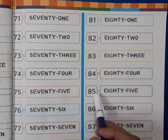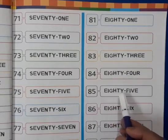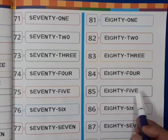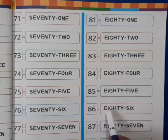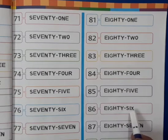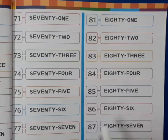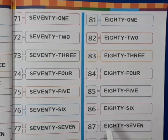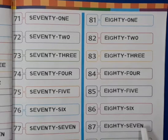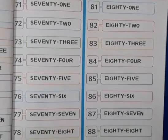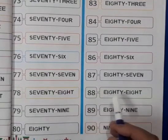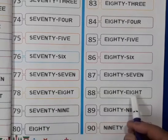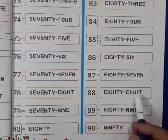This is 85. E-I-G-H-T-Y, F-I-V-E, 85. This is 86. E-I-G-H-T-Y, S-I-X, 86. This is 87. E-I-G-H-T-Y, S-E-V-E-N, 87. Now, this is 88. E-I-G-H-T-Y, E-I-G-H-T, 88.